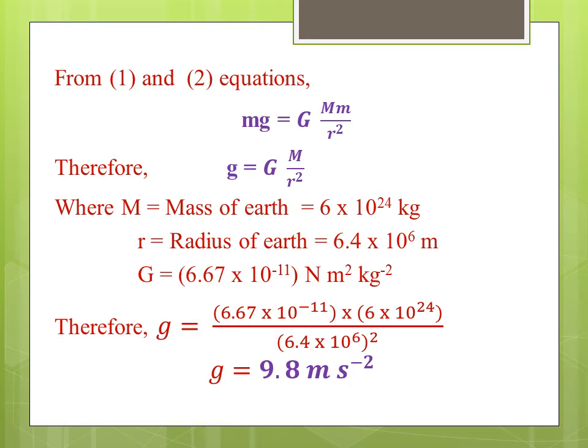From equation one and equation two, we get small m into small g equals capital G into capital M small m by r squared. Therefore, small g equals capital G into capital M by r squared where capital M is mass of earth that is equal to 6 into 10 power 24 kilograms, small r is radius of earth that is equal to 6.4 into 10 power 6 meters, capital G is 6.67 into 10 power minus 11 newton meter square per kilogram square. By simplifying the expression, we get small g equals 9.8 meter per second square.